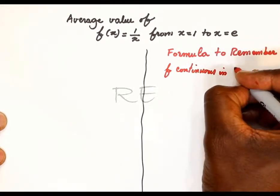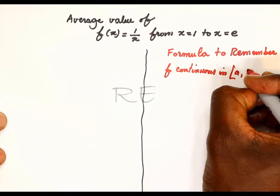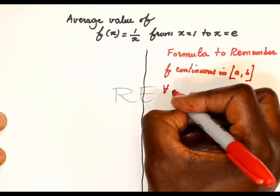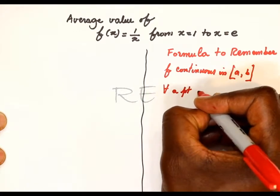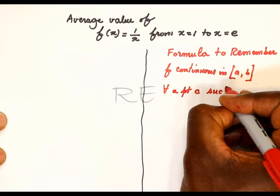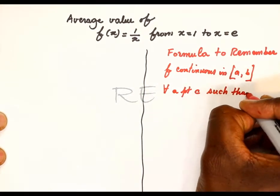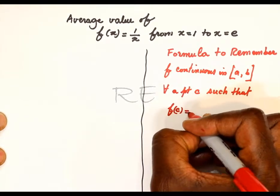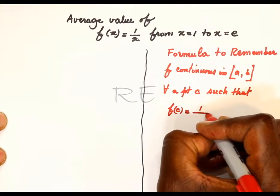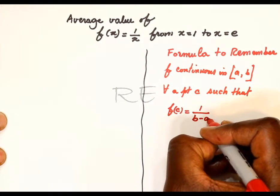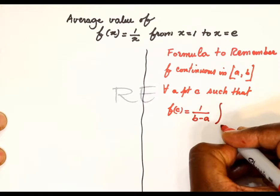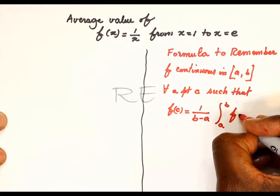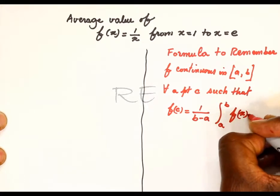Formula to remember: if f is continuous in a closed interval [a, b], there exists at least a point c such that f of c is equal to 1 over b minus a, the integral from a to b of f of x dx.